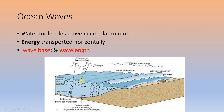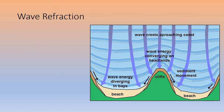As waves approach shore, in deep water the wave base doesn't interact with the ground. But as it shallows, the wave base starts to interact with the seafloor, causing friction. The front of the wave slows down while the back keeps coming, causing the wave to pile up on itself. Eventually it breaks and crashes up the beach in what's known as the swash zone.